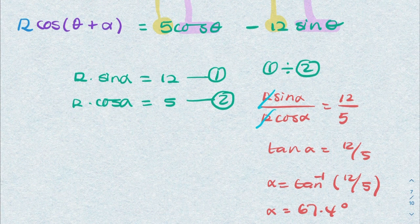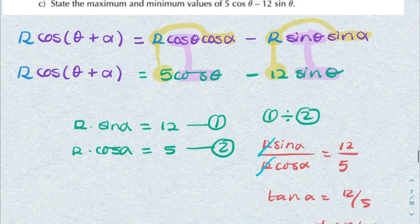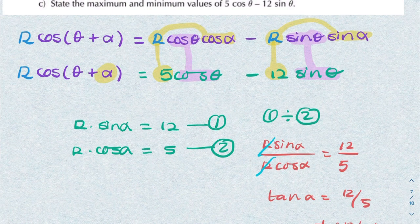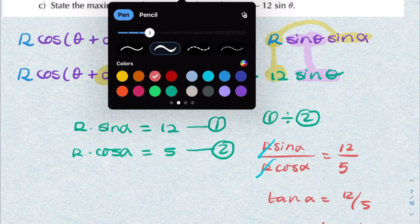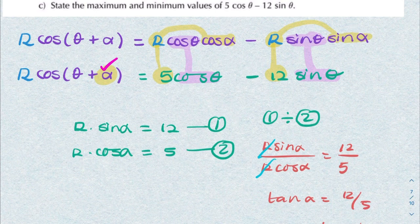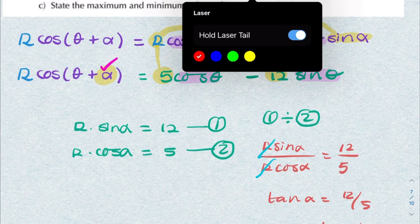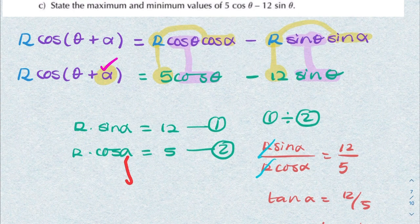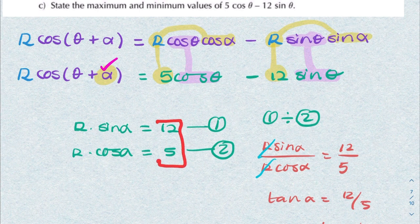So that's the first thing they wanted—they wanted alpha and we have found alpha. We now need to find R, and you can do that either by substituting alpha into either of these two equations or simply